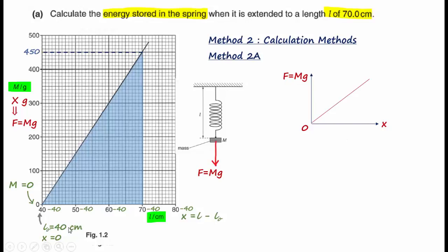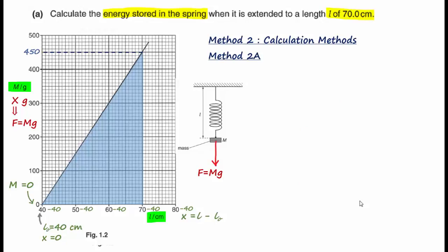Since the spring obeys Hooke's law, elastic potential energy is given by half kx². Our task simplifies to finding the spring constant k and the extension x when L equals 70 cm. To find k, we can use any set of m-L values from the graph. Since we are finding the extension when L equals 70 cm, we use the value of m there.